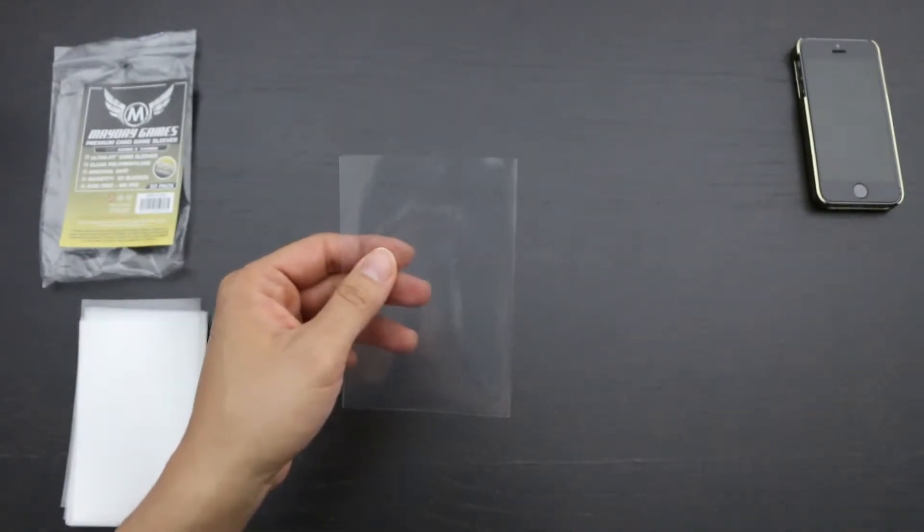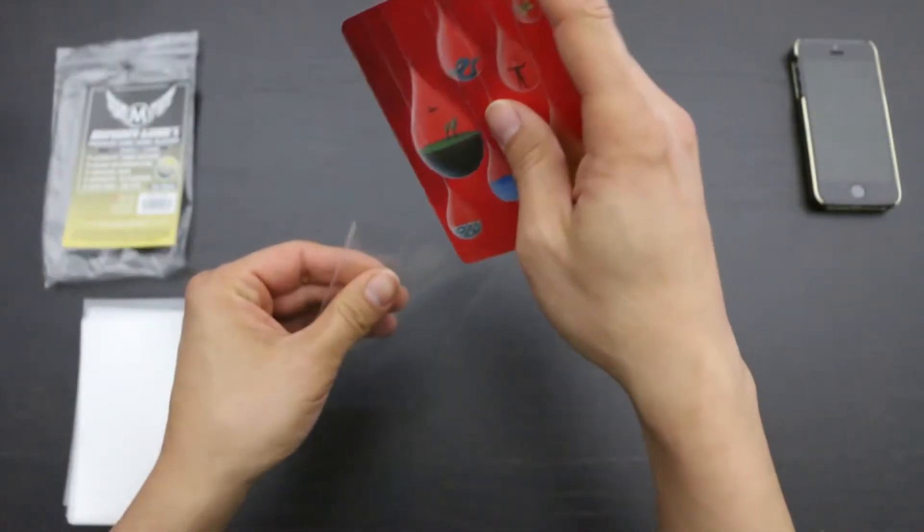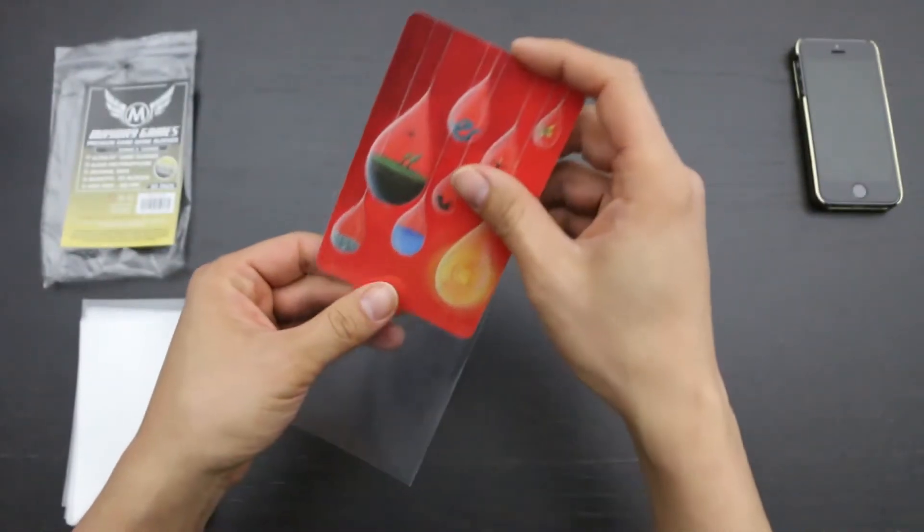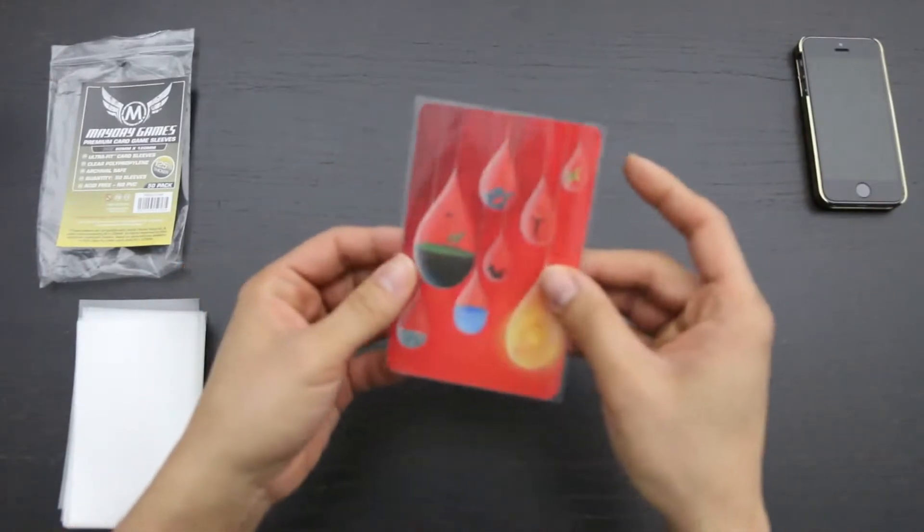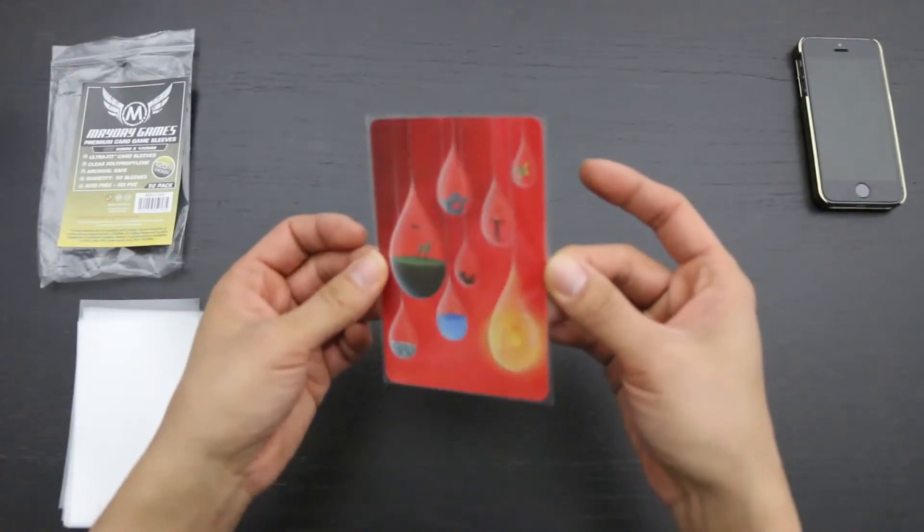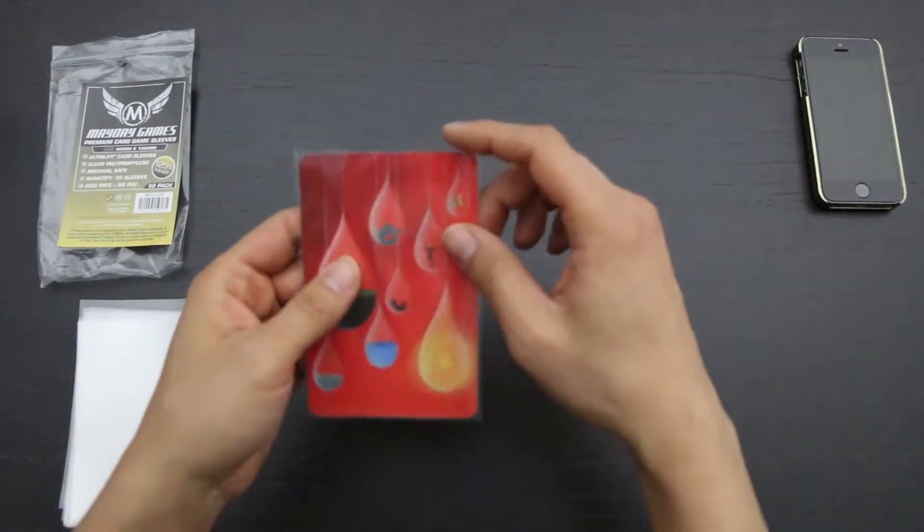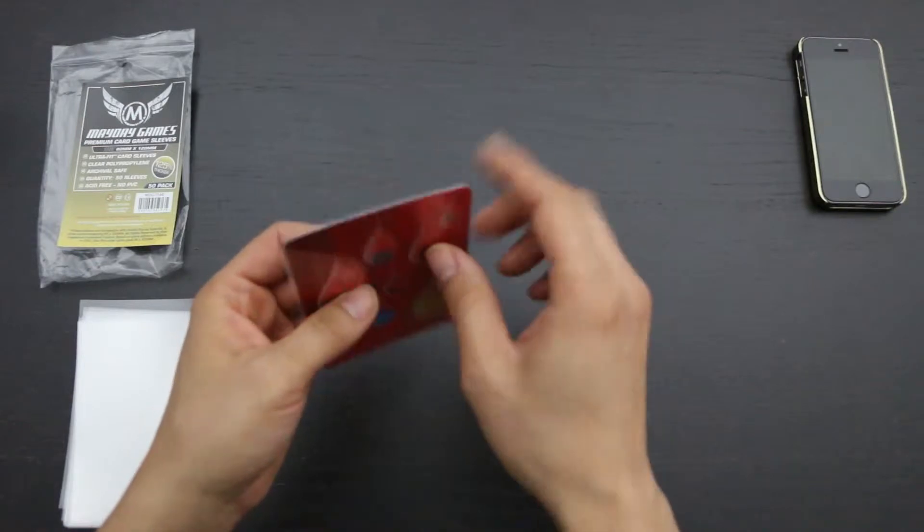Now, to see how a card fits, I have 1 Dixit card here, which is the most common card of this size. And as you can see, it fits just fine. There is very little extra play on the edge and not a lot of space between the opening of the sleeve and the top edge of the card.